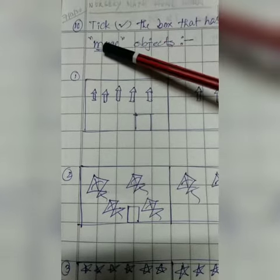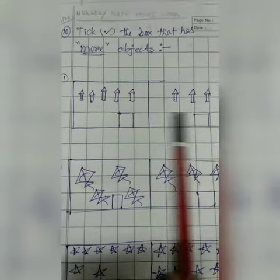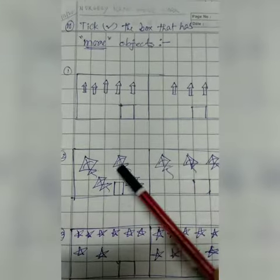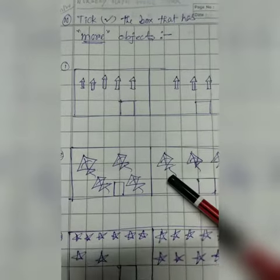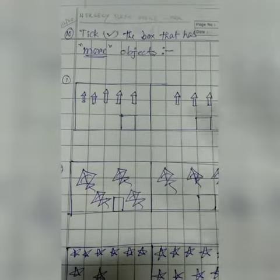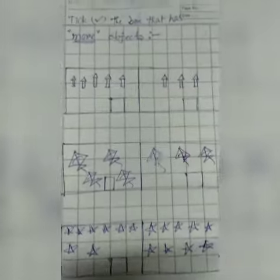Okay, so here are two boxes with the same objects but different numbers. You have to tick the box which has more objects—the box that has more, you tick that box. Okay?